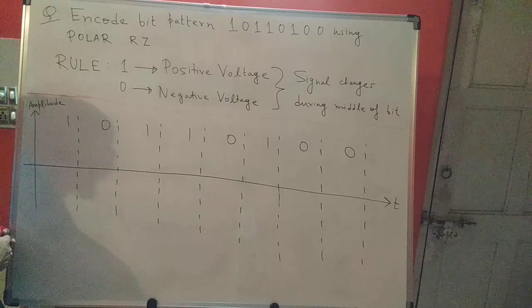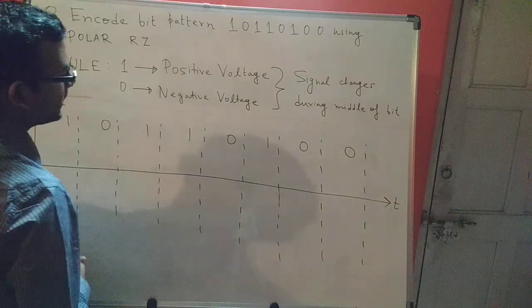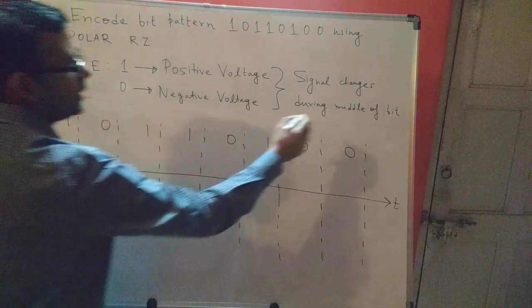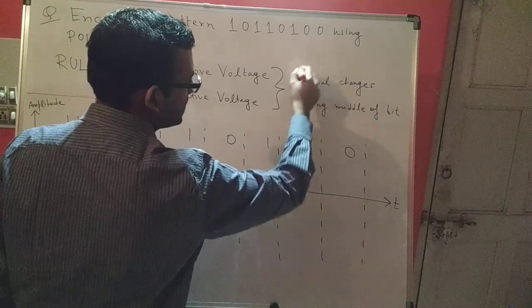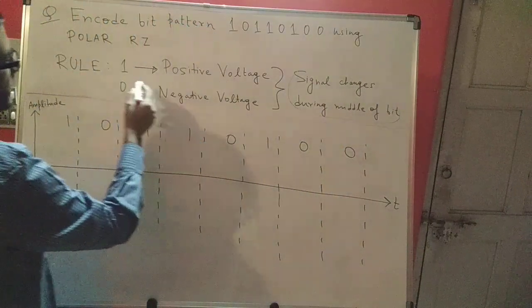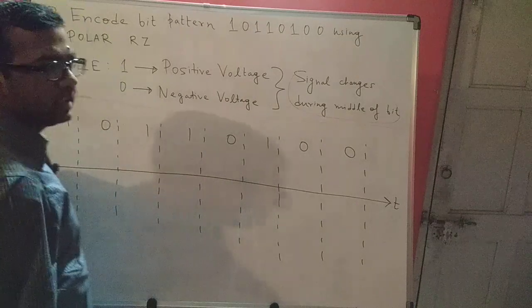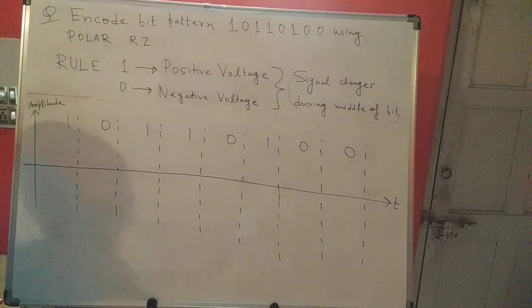This technique is slightly different in the sense that you will find the signal to change during the middle of the bit. This is important here. We have seen before that 1 representing a positive voltage, 0 representing a negative voltage.